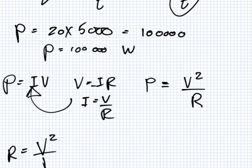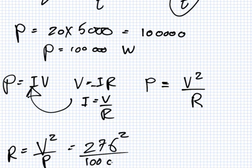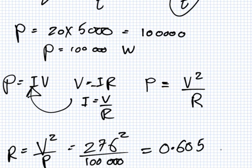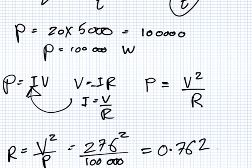What did I ask for? The resistance. The resistance. And I give you the current — sorry. So P equals I squared R. We don't know the current. So, what I should do is change this into I equals V over R, and put that in here, and make P equals V squared over R. So, that means R equals V squared over P, which equals 276 squared over 100,000.